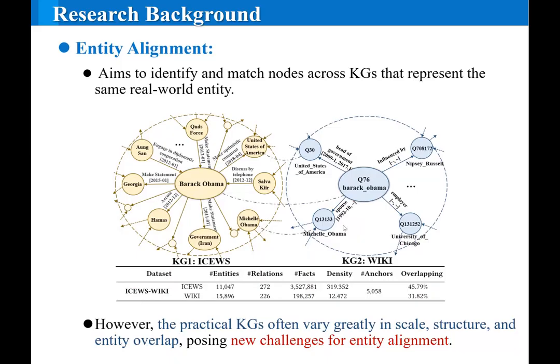With the wider spread adoption of knowledge graphs in various applications, entity alignment has emerged as a key step in connecting different KGs. The goal of entity alignment is to identify and match nodes across KGs that represent the same real-world entity. However, practical cases often vary greatly in scale, structure, and entity overlap, posing new challenges for entity alignment.